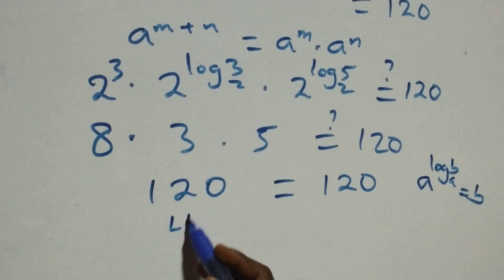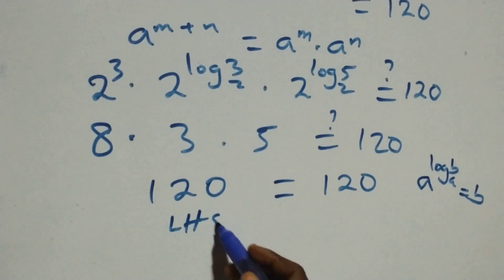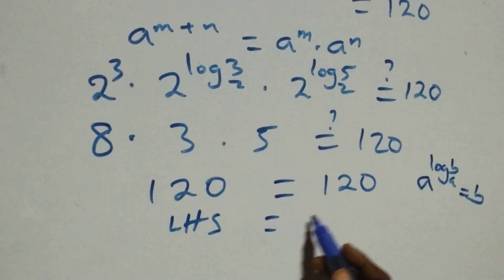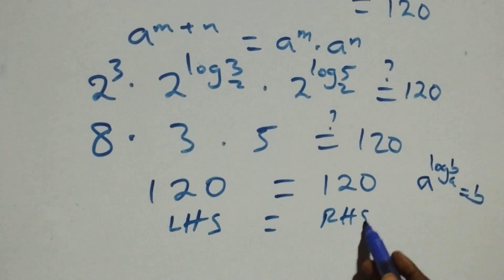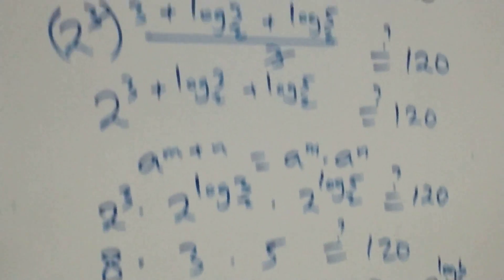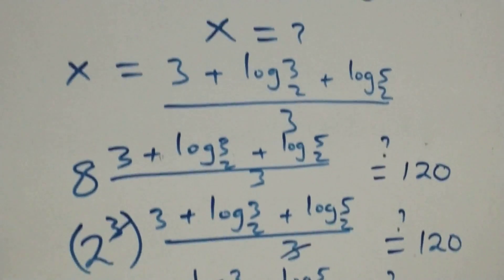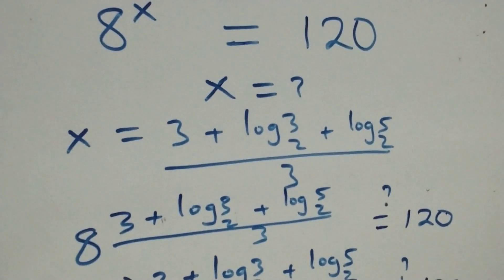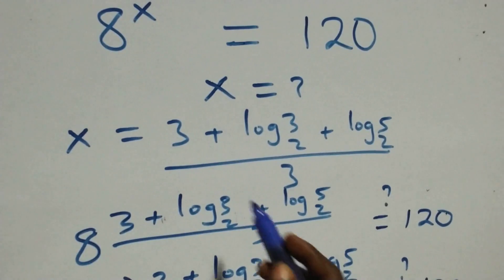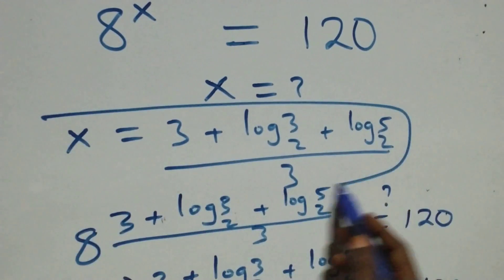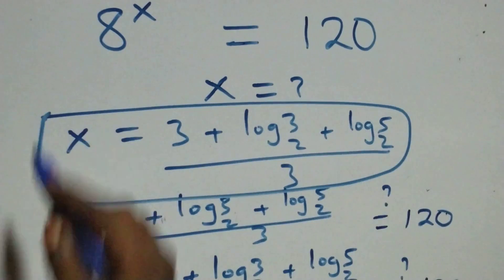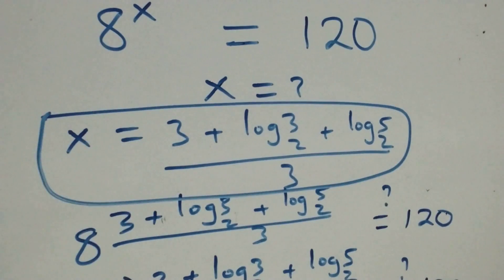Left-hand side equals right-hand side. Therefore, we conclude that x equals (3 plus log₂3 plus log₂5) all over 3 satisfies the given problem. Thank you for watching.